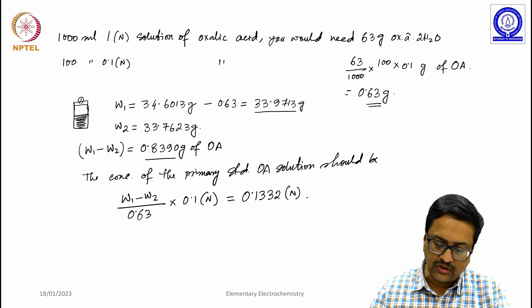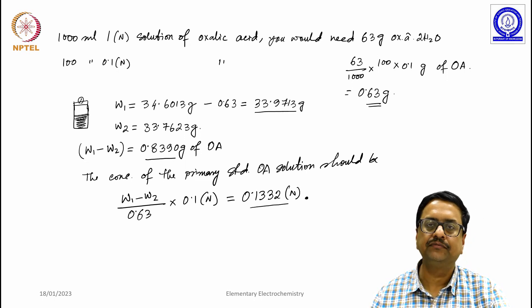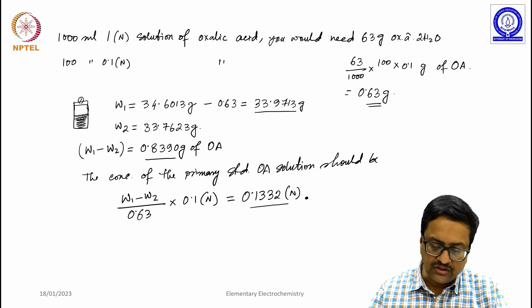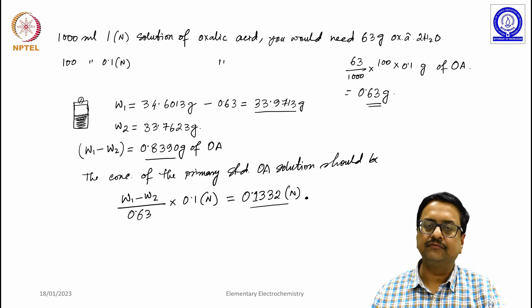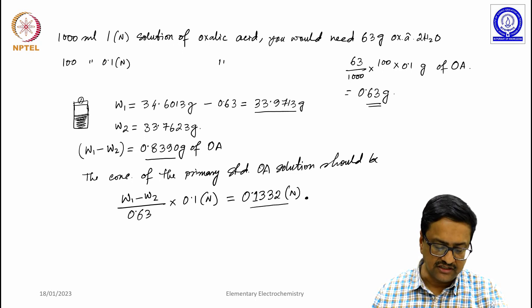So here we wanted to make 0.1 normal, but by adding little more, we have increased the concentration by certain amount, but what we know is the exact strength, that is what is the exact concentration of oxalic acid in this solution.